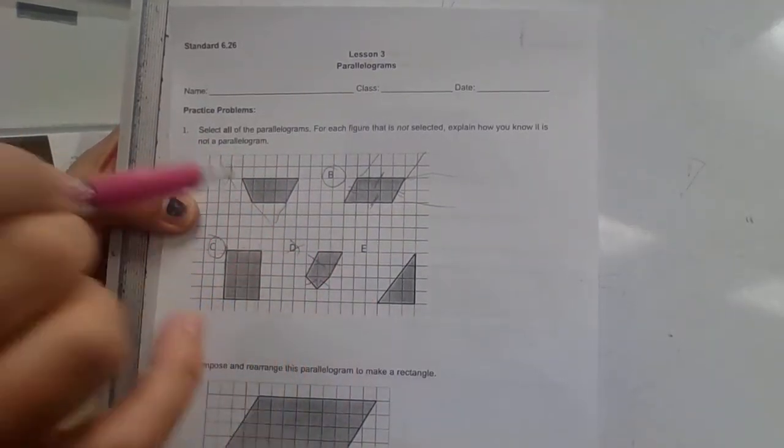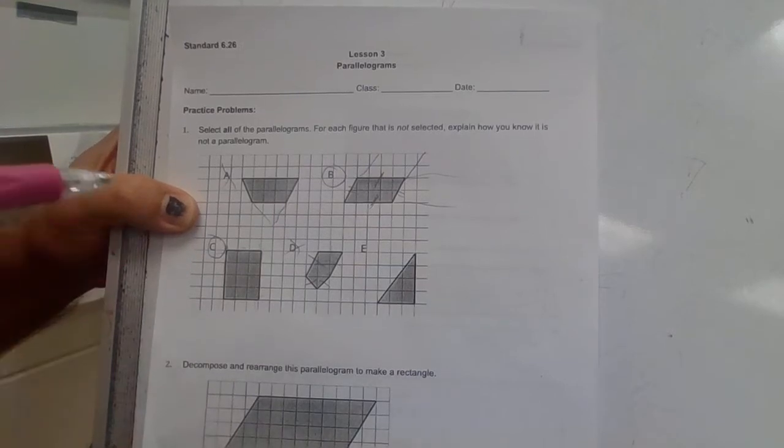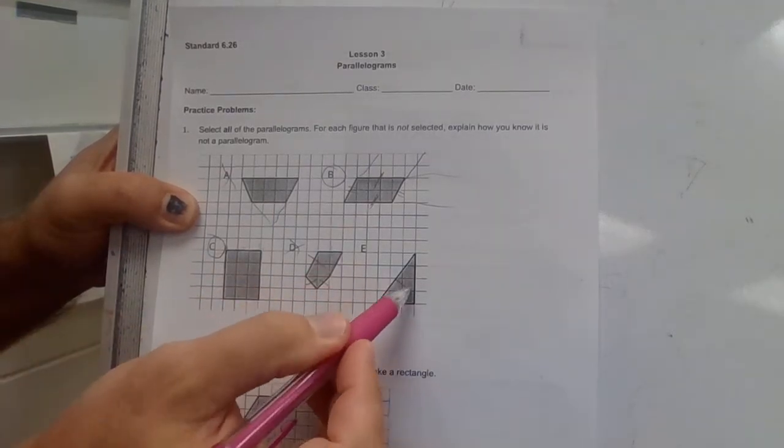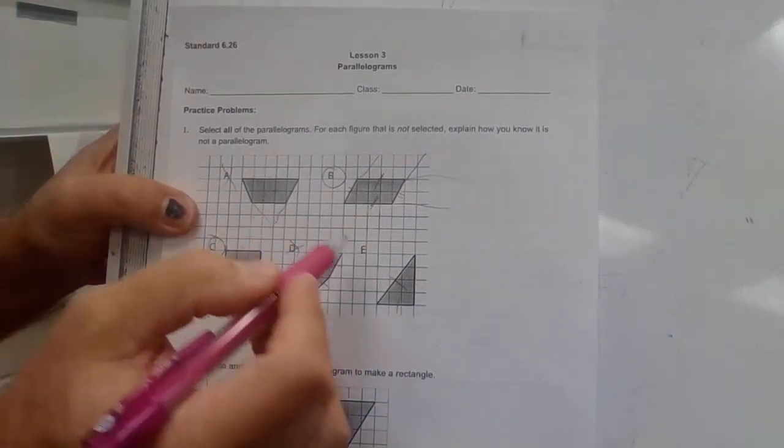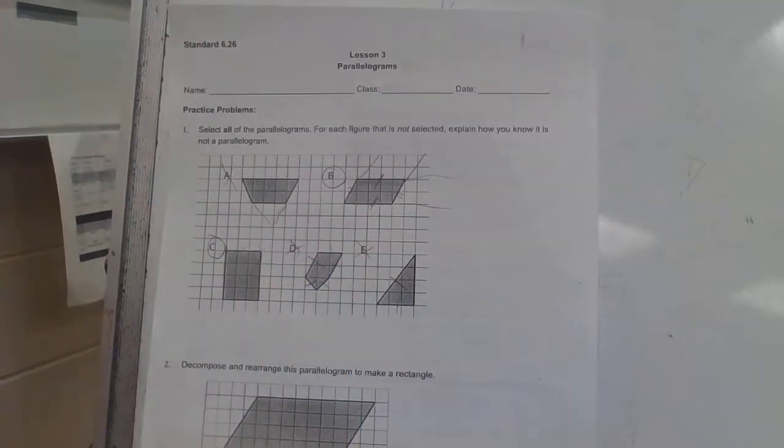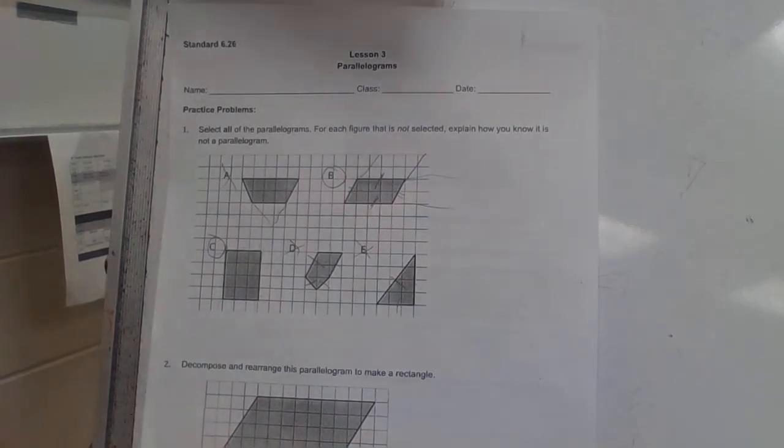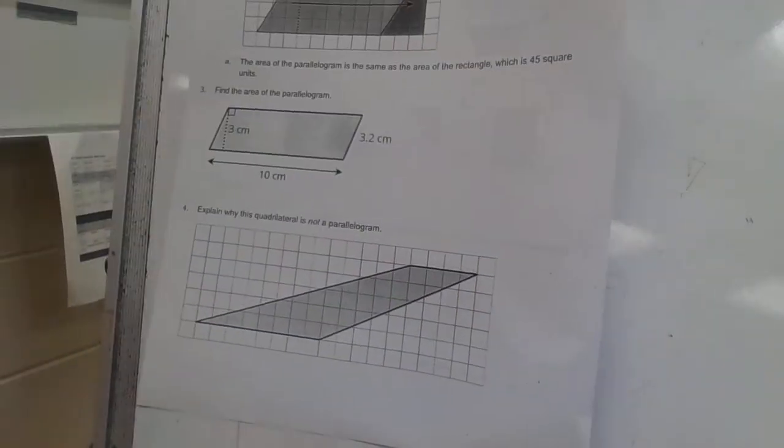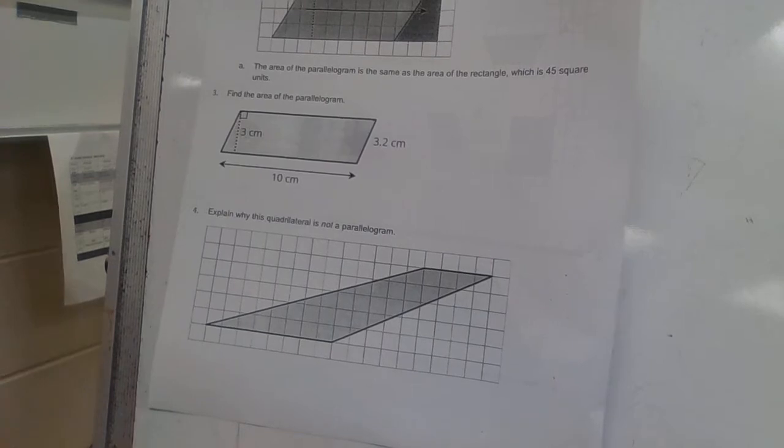Four-sided shape, opposite sides parallel. One, two, three. We know by looking at this it's a triangle. It is not a four-sided shape, it is a three-sided shape.